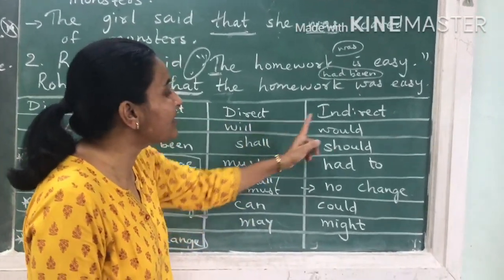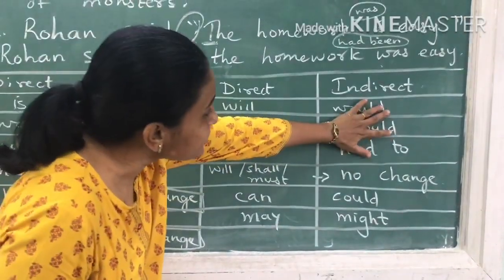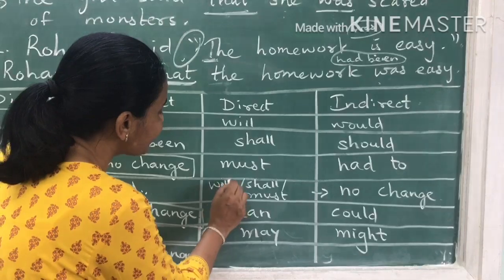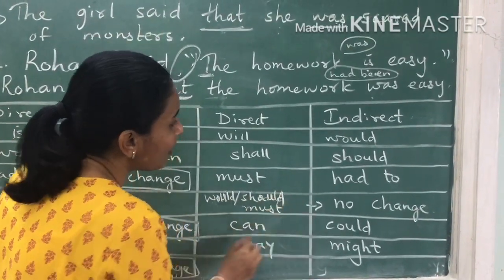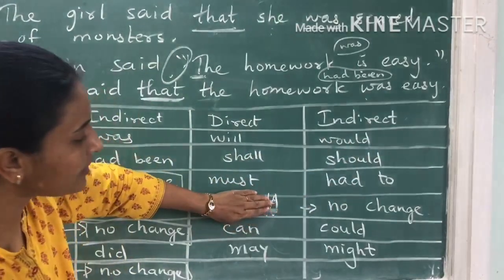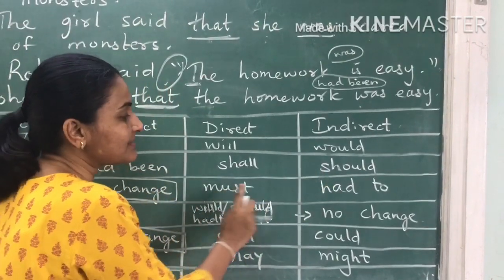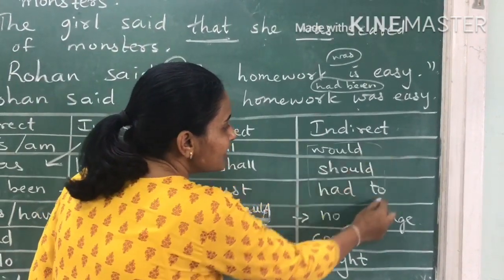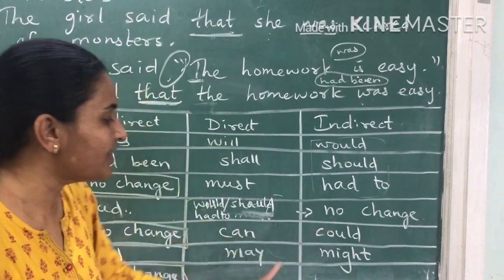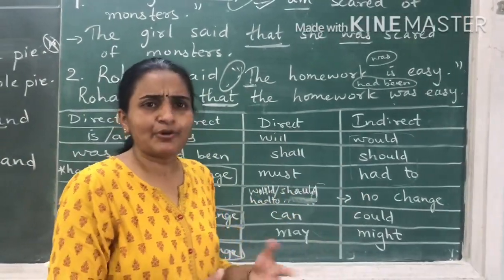Next, very easy: 'will' becomes 'would', 'shall' becomes 'should', 'must' becomes 'had to'. But if these words are already 'would', 'should', or 'had to' in the direct speech, then there is no change. 'Can' becomes 'could', and 'may' becomes 'might'. These rules are very easy to remember if you just keep on practicing sentences.